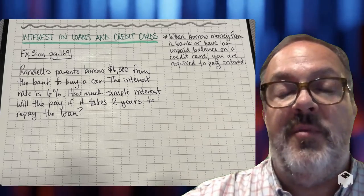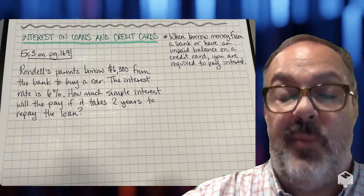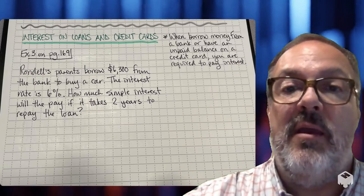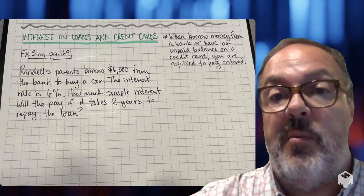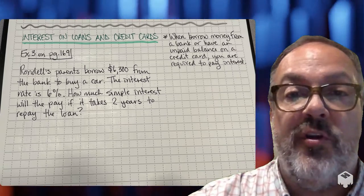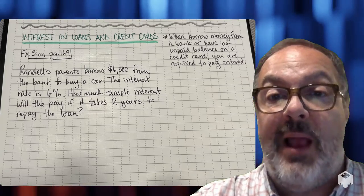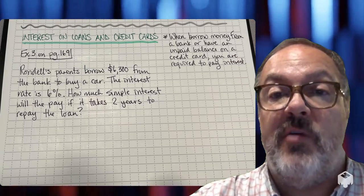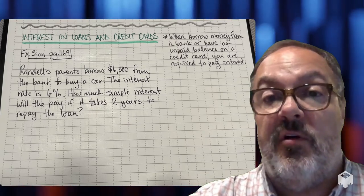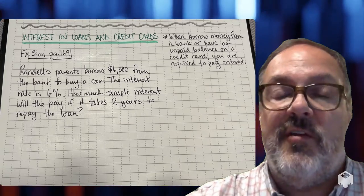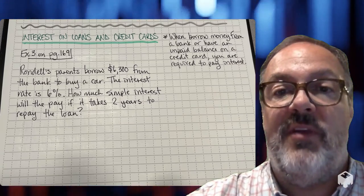Sometimes interest comes in the form of something that you must pay back. For example, if you borrow money from a bank or you have any unpaid balance on your credit card, then you will have what's called interest owed. So let's take a look at a problem involving this.